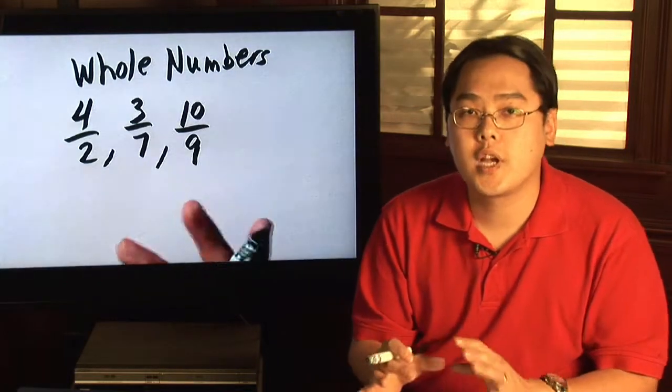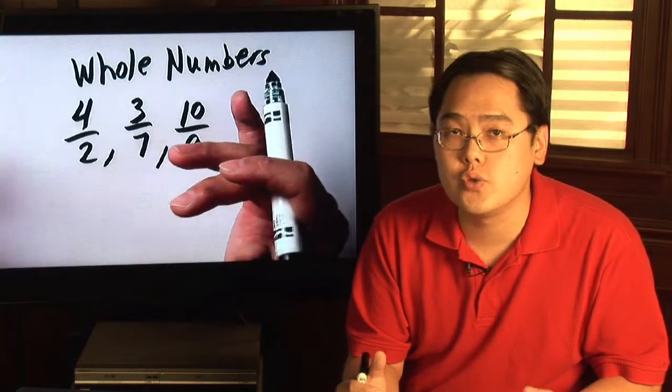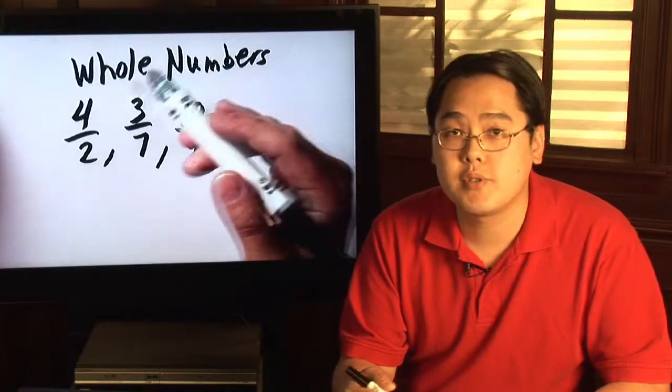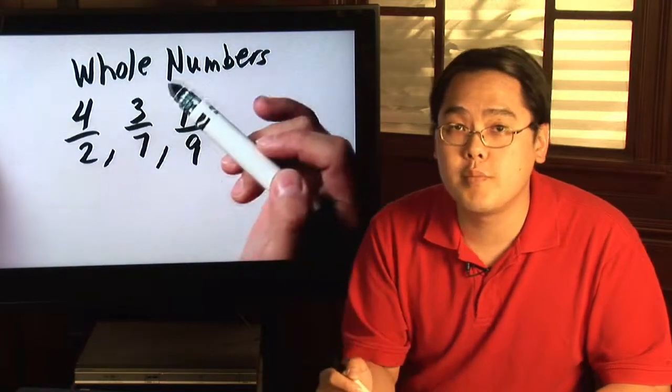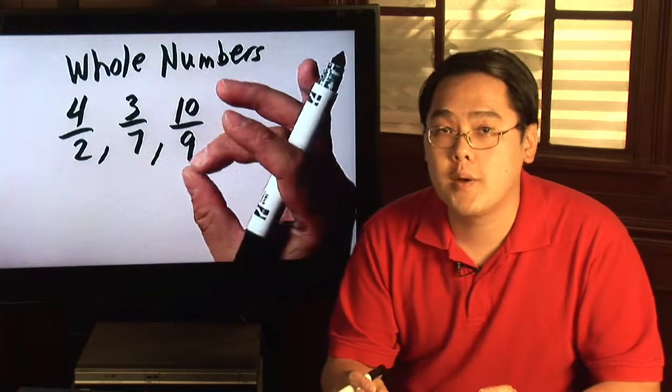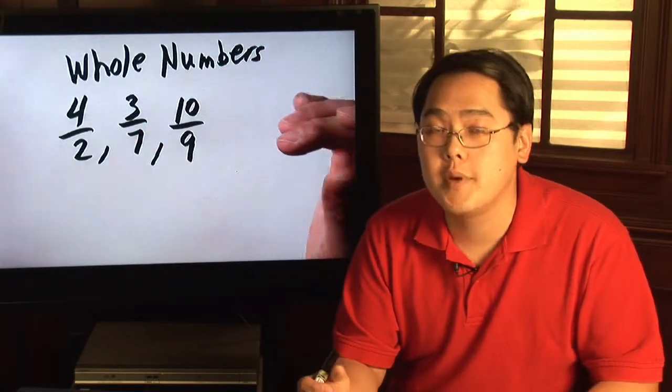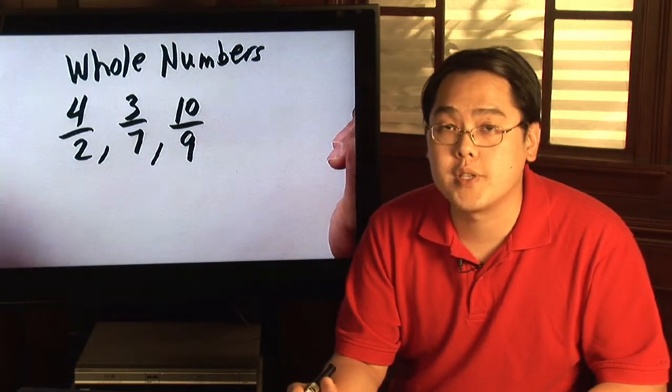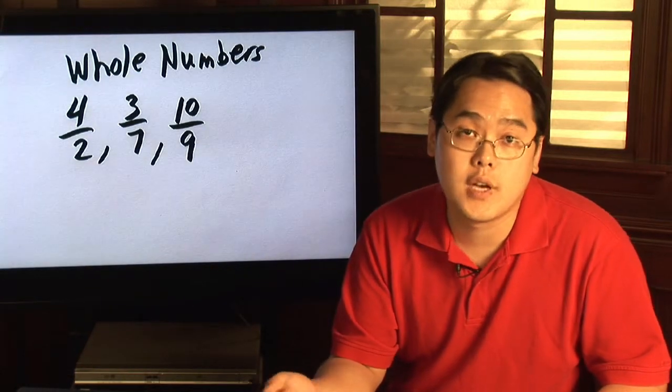But then, when it comes to the basic levels of math, it might be helpful to use some money examples or some food examples. For example, take a dollar bill. We know dollar bills, five dollar bills, they're all considered whole numbers. But when it comes to introducing fractions with money for the first time, use coins and explain to them that each coin represents a certain fraction of a dollar bill.